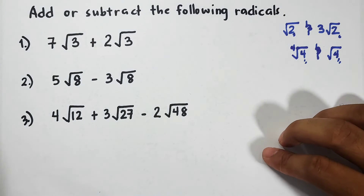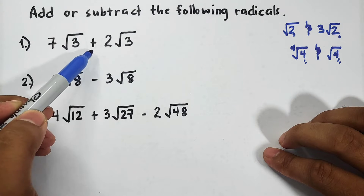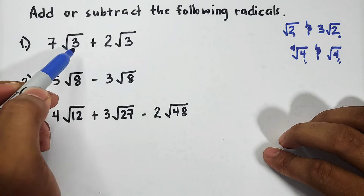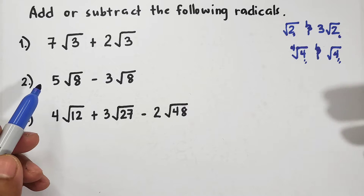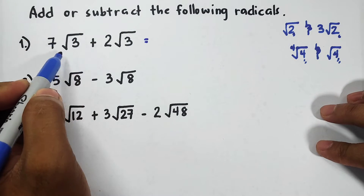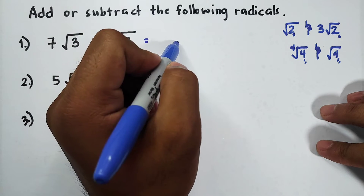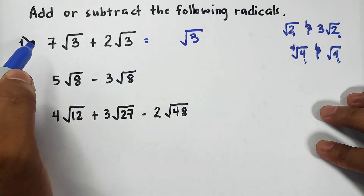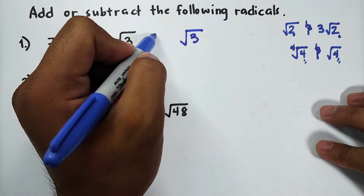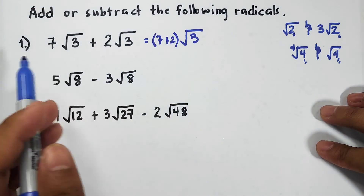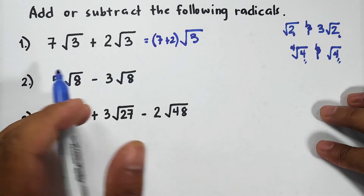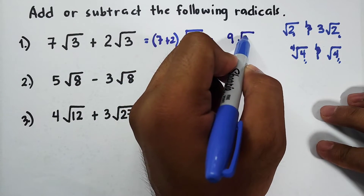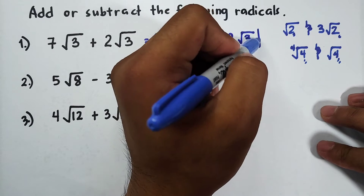For number 1, we have 7√3 + 2√3. First, check — the index of both is 2, and the radicands are the same, so we can add them. We copy the radical √3, and treat the numbers outside as coefficients. So we have 7 + 2, which equals 9. Copy the square root of 3, and our answer is 9√3.